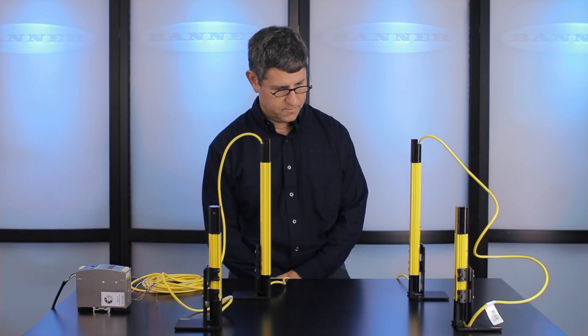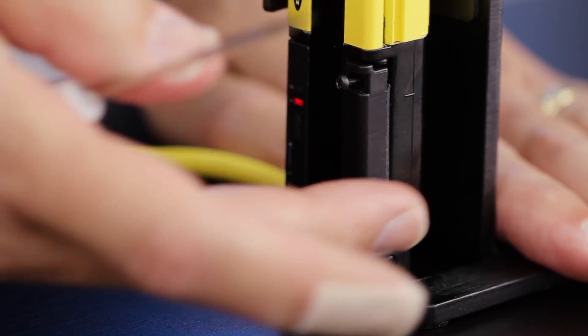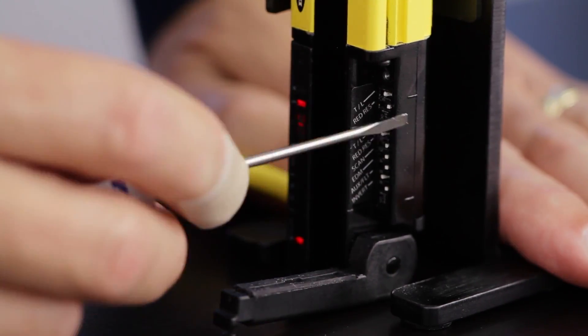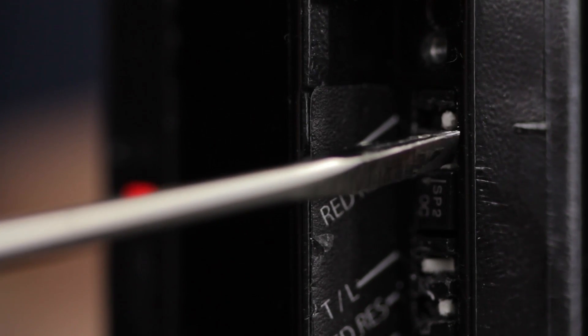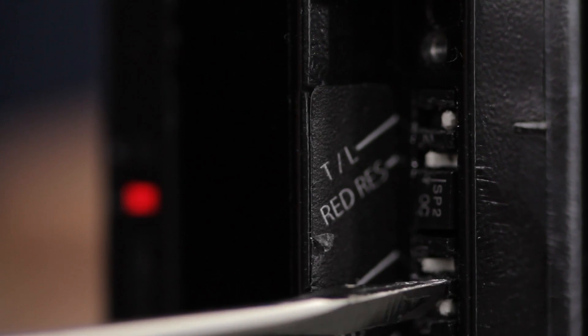If you're configuring the easy screen LP system, the wiring remains the same, the configurations remain the same, the only difference is the location of the dip switches.